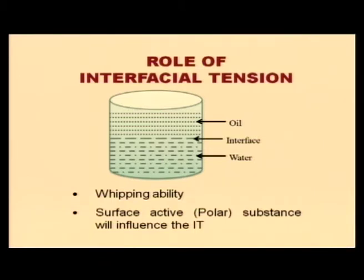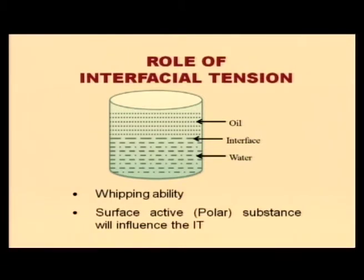Interfacial tension also influences the stability of milk fat in the ice cream mix. If interfacial tension is lower, the fat will get dispersed into the mix, and there will be no formation of butter grains or churning of milk fat. Substances present at the interface decrease the surface tension — for example, emulsifiers get adsorbed on the surface because they are surface active substances. Similarly, the milk proteins in MSNF also get adsorbed at the interface and decrease the interfacial tension. Interfacial tension can be increased or decreased by adjusting emulsifiers and MSNF, and it influences whipping ability and ultimately the overrun — how much air is in the ice cream.